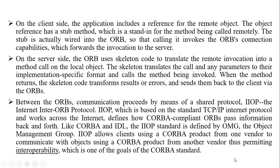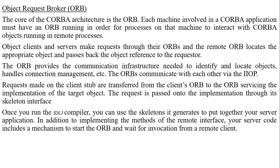CORBA is useful because RMI is advantageous only for Java code, while CORBA is a class library that communicates between Java and other CORBA apps. The core of the CORBA architecture is the ORB. Each machine involved in a CORBA application must have an ORB running in order for that machine's process to interact with CORBA objects running on a remote process.